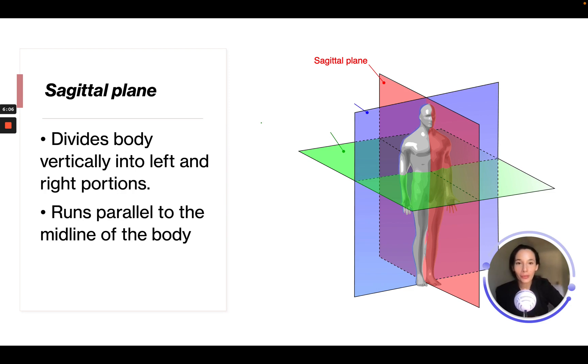So sagittal plane, that's going to be this red plane that is dividing the body vertically into left and right portions. So sagittal coming down the center creating left and right, and it runs parallel to the midline of the body. So you think like midline of the body comes down like this—that is where the sagittal plane is running.